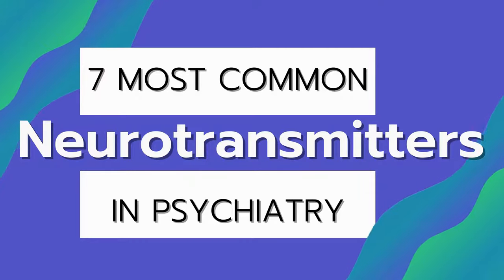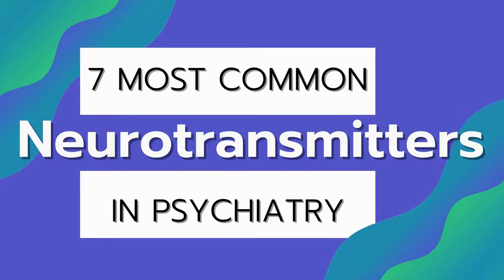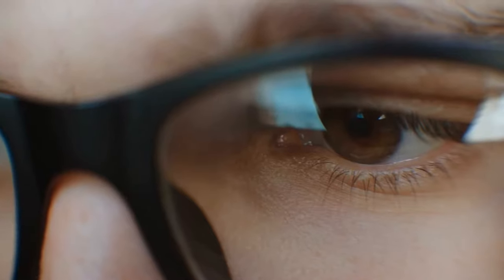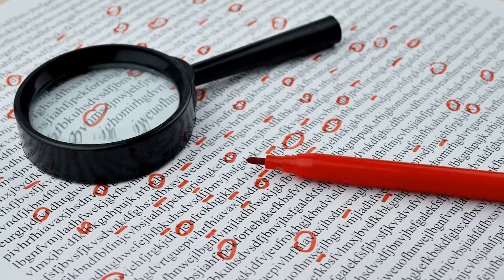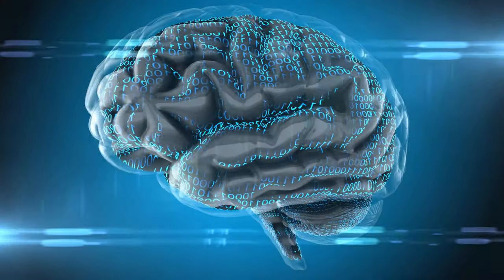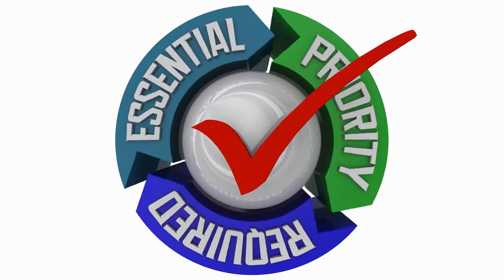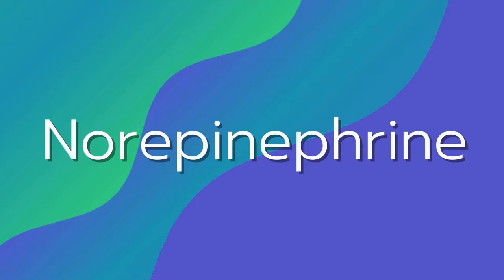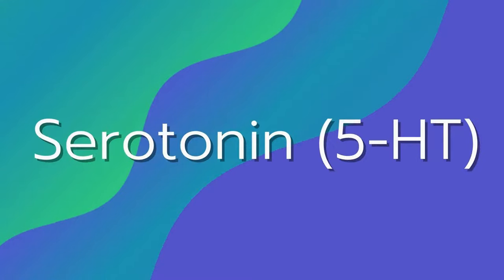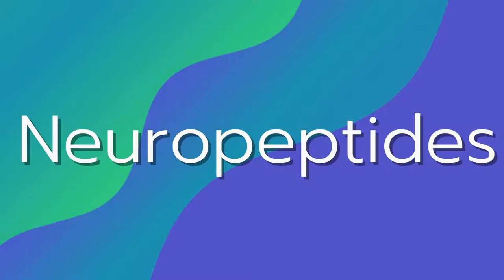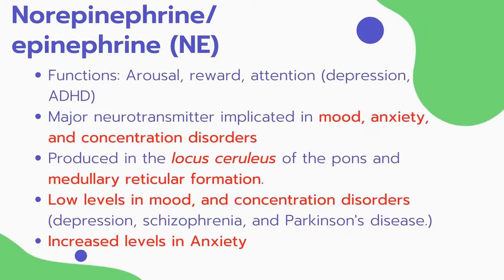In this video I'll go over the seven most common neurotransmitters in psychiatry. I have put what is important to know and focus on in red, and I will also cover the neurotransmitters associated with each psychiatric disorder — this is very high yield on exams. The seven neurotransmitters I'll be covering are norepinephrine, serotonin, dopamine, acetylcholine, GABA, glutamate, and neuropeptides.